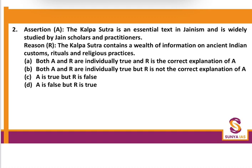Question 2 — Assertion-Reasoning: 'The Kalpa Sutra is an essential text in Jainism and is widely studied by Jain scholars and practitioners.' Yes. 'Kalpa Sutra contains a wealth of information on ancient Indian customs, rituals and religious practices.' We have covered that it contains Jain rituals of Paryushana, Samvatsari, Upavas. Put the conjunction 'because' — Kalpa Sutra is essential and is studied because it contains a wealth of information. It makes sense, so A is the correct option. Kalpa Sutra is also known as the Jain Canon of Rituals.